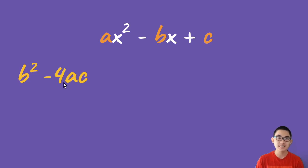And so what does the discriminant do? Well, it tells us how many solutions this function has. Or in other words, how many times does this function touch the x-axis?